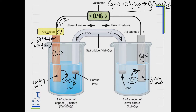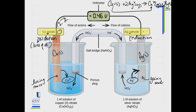Those electrons flow through a voltmeter — which measures the voltage and is not a required component — over to the right-hand side, where we have the cathode. At the cathode, reduction takes place. Conveniently, cathode and reduction both start with consonants. The electrons pump into the cathode, and it is labeled positively charged.